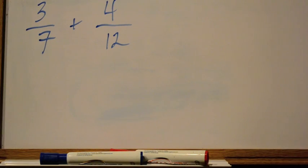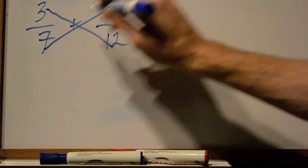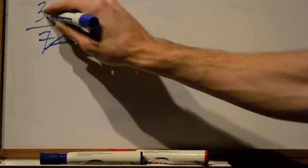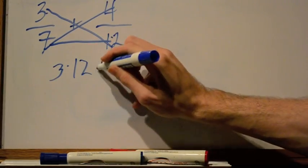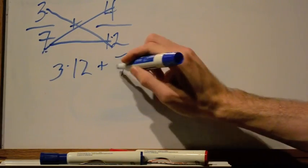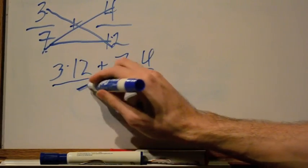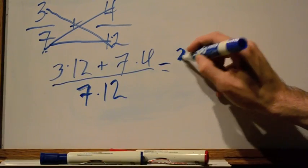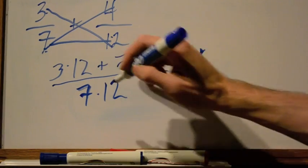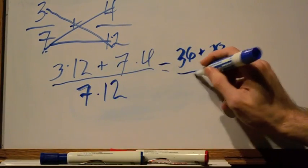Instead of that, you do rapid fire. This times this plus this times this over this times this. So ready? 3 times 12 plus 7 times 4 over 7 times 12. 3 times 12 is 36 plus 7 times 4 is 28 over 7 times 12 is 84.